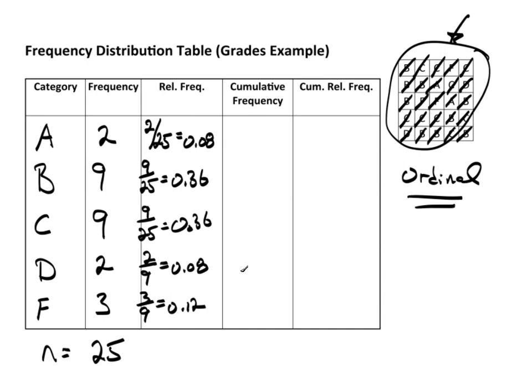Now, the next column in this frequency distribution table is called cumulative frequency. So, the first one is going to be a two. And the next is eleven. Okay, where do those come from? Well, how many A's or better were there? Well, A is the first group, there are two. Well, there are nine B's. Well, how many got B's or better? Nine plus two is eleven. C's, how many got a C or better? Well, eleven plus nine is obviously twenty. And then D's, D's or better. Twenty plus two is twenty-two. And then F's, that's everybody. Twenty-two plus three is twenty-five.